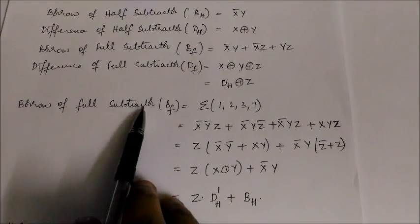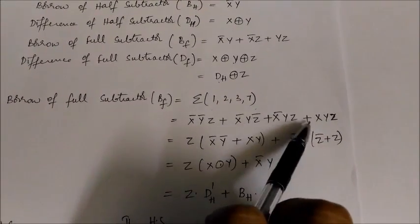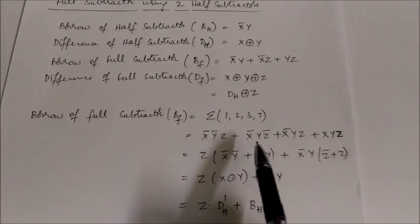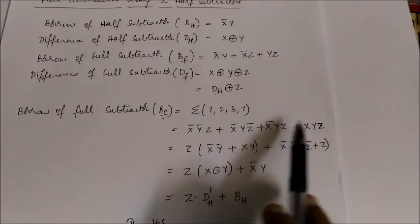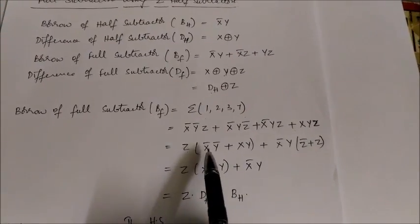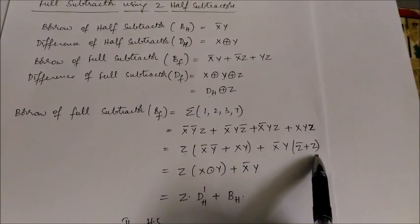Now consider the borrow of full subtractor in terms of sigma. I am considering the minterm expression, the sum of minterms expression. Now from the first and last terms, take z common: x bar y plus xy. From these two terms, x bar y common: z bar plus z.